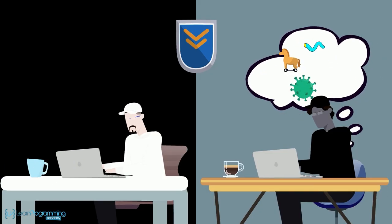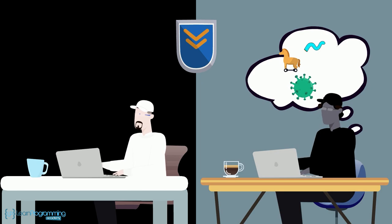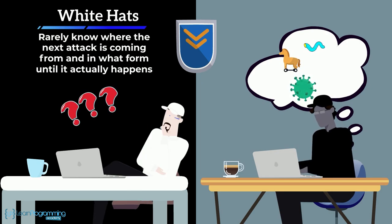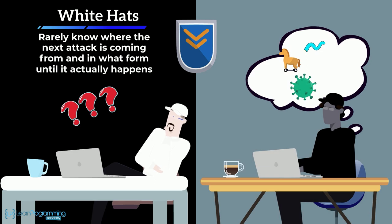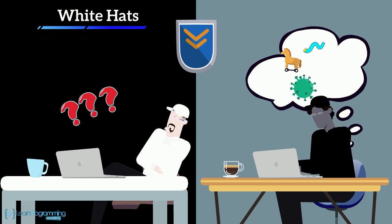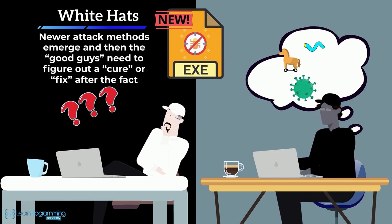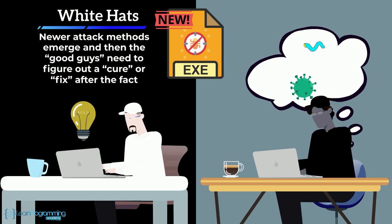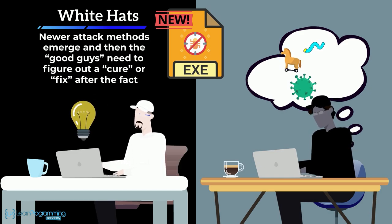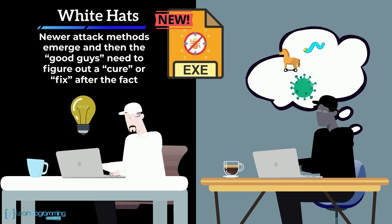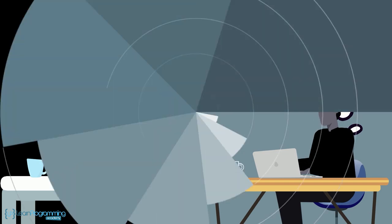Security is an ever-elusive challenge because the good guys — sometimes called white hats — never really know where the next attack is coming from or in what form until it actually happens. Newer attack methods emerge, and then the good guys need to figure out a cure or fix after the fact, so we are always at least one step behind the malware and the bad guys, sometimes called black hats.